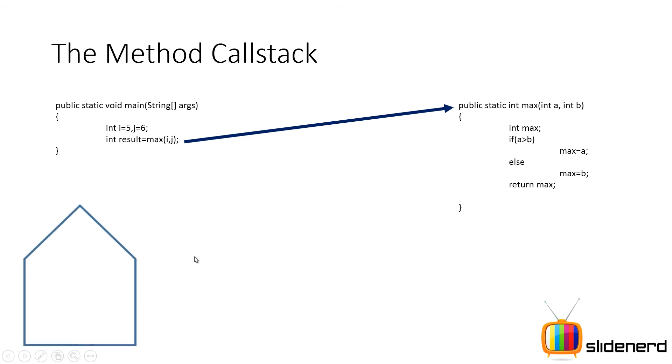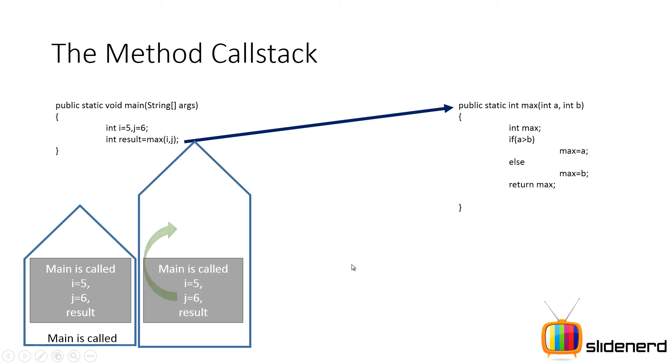So what happens in the compiler? First what you have is a stack. Inside the stack, whatever method gets called is always on the top. First our compiler calls the main method, which means it is on the top. You have the value i is 5, j is 6, result is null. Then from main method you call max method, which means this time max method comes to the top over here. As you guys notice, main is over here. The value i equals to 5 gets into a equals 5, the value j is 6 is copied into b equals 6.